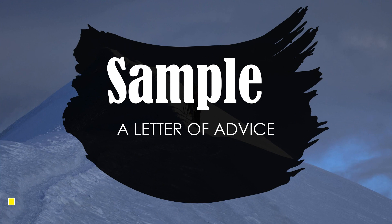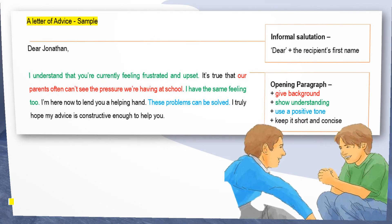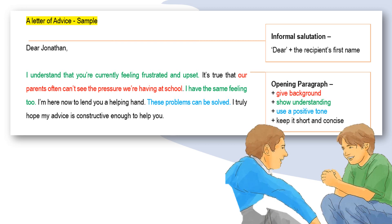Now let's look at a sample — we learn best with examples. Here is a sample of a letter of advice. Let's say we're going to write a letter to a boy called Jonathan. Usually in a letter of advice, we start with 'dear somebody.' Because it's usually written to a friend, it's more suitable to use their first name — 'dear Jonathan' — rather than 'dear Mr. Chen,' which sounds totally strange.